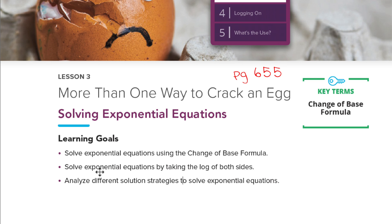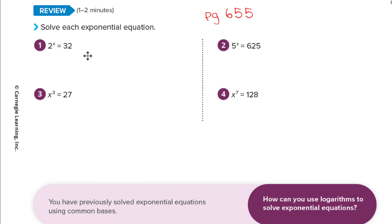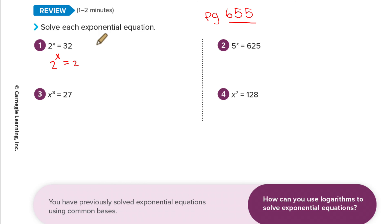We're going to solve exponential equations by taking a log on both sides. Let's get started with a little bit of review — we're going to review some change of base stuff we've done in the past. On page 655, number one: 2 to the x equals 32. We already know how to solve this from before — we just write it with a common base. You get 2, 4, 8, 16, 32, so that is 5 of these, and we get x equals 5. We know that's true because the bases are the same, so the exponents have to be the same.